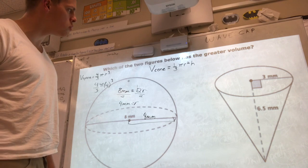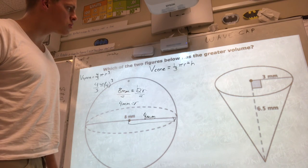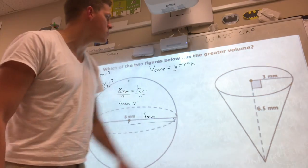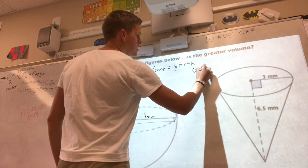And then we're gonna come over here. We got the volume of a cone, 1/3 pi r squared times h. Our height here is going to be 6.5 millimeters. So I'm gonna put that here.